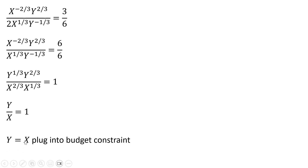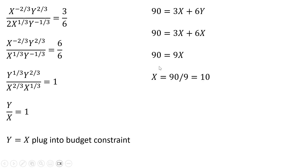The next step is to plug this result into the budget constraint. Wherever we have Y, we replace it with X, since Y equals X. After substituting and simplifying, we get 90 equals 9X. Dividing through by 9, X equals 10 — so the consumer should buy 10 units of good X. And since Y equals X, Y equals 10 as well. So X equals 10 and Y equals 10 is our utility maximizing consumption bundle.